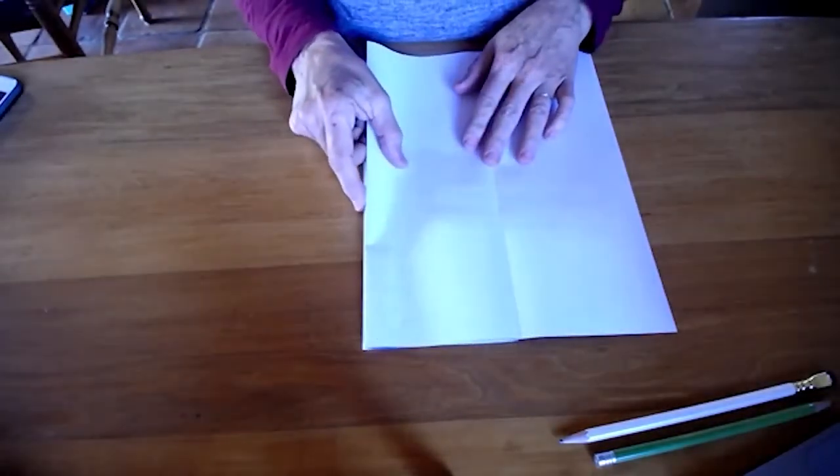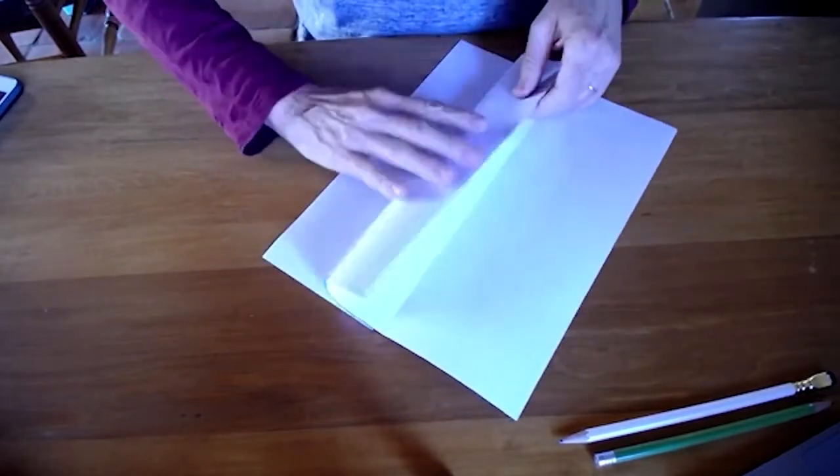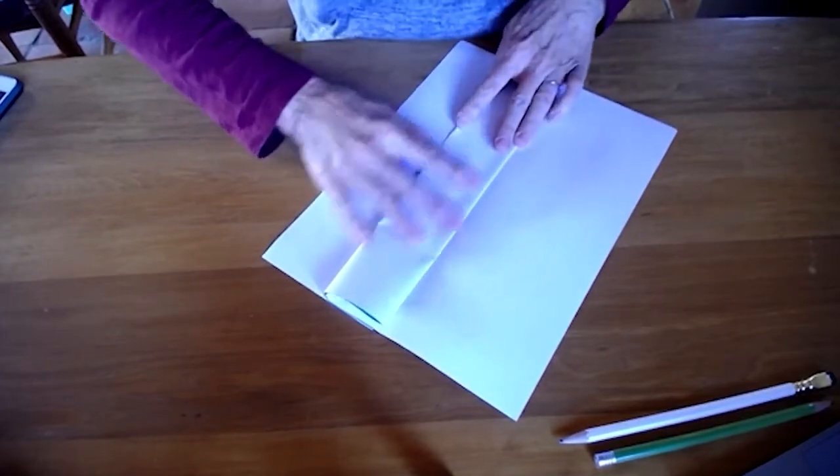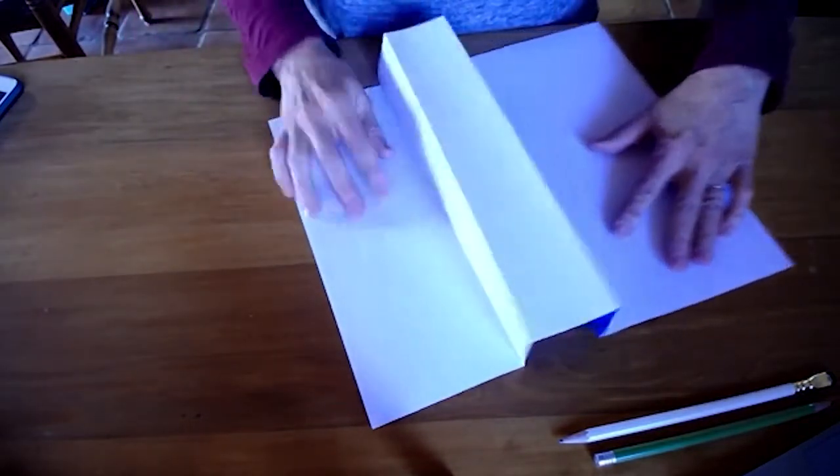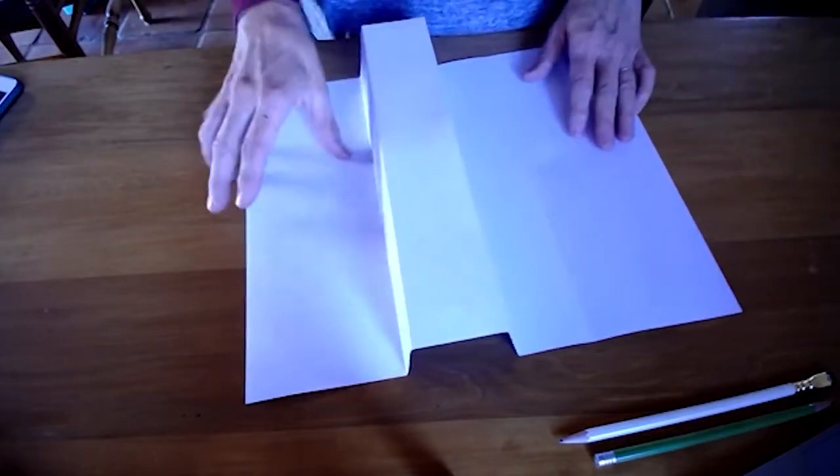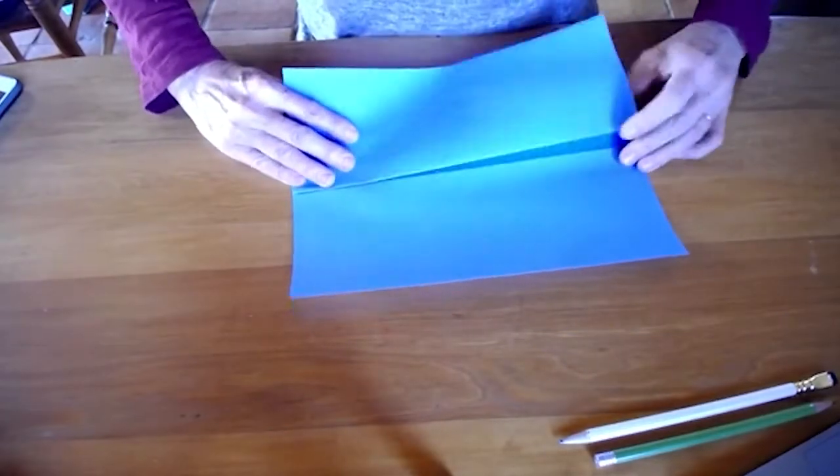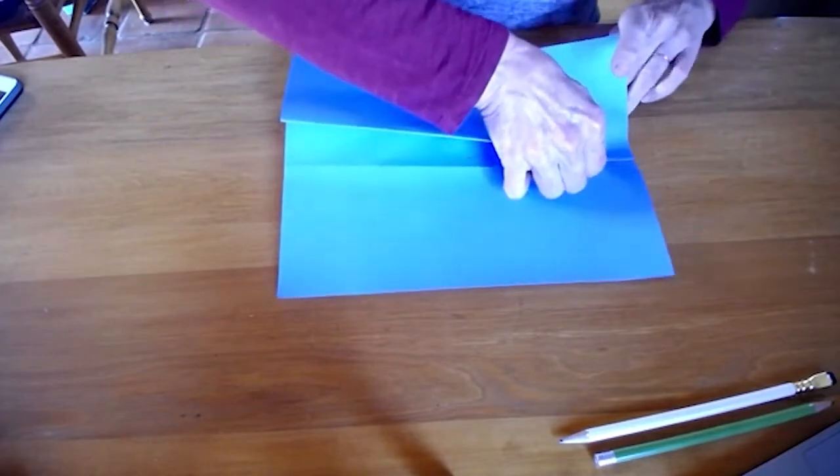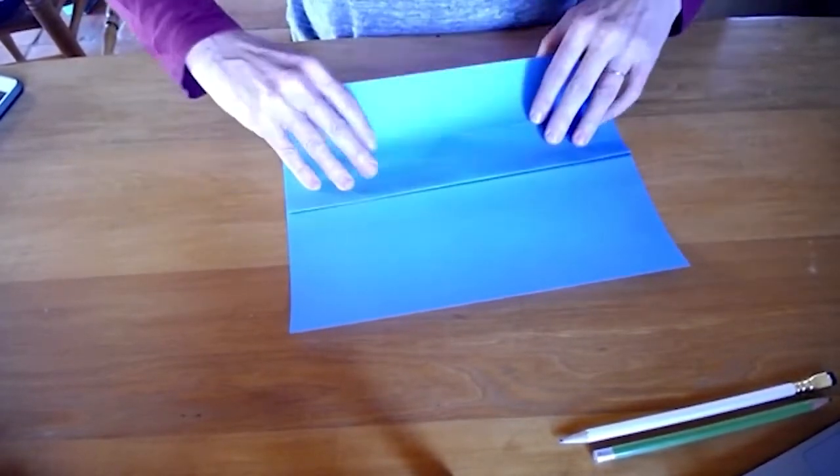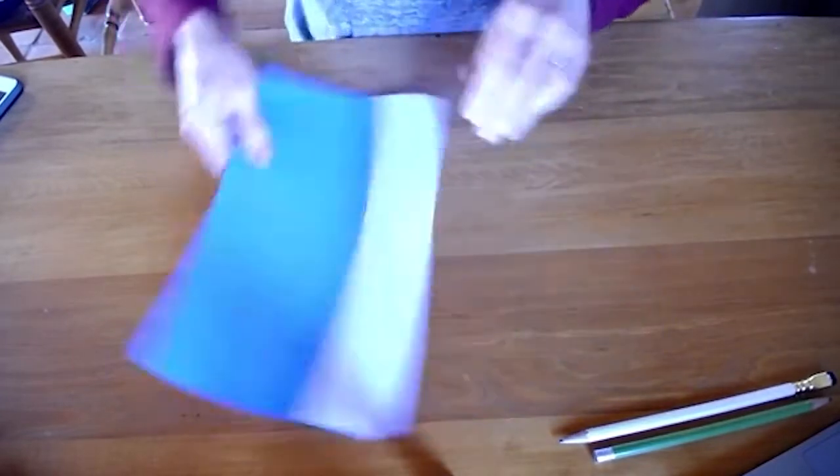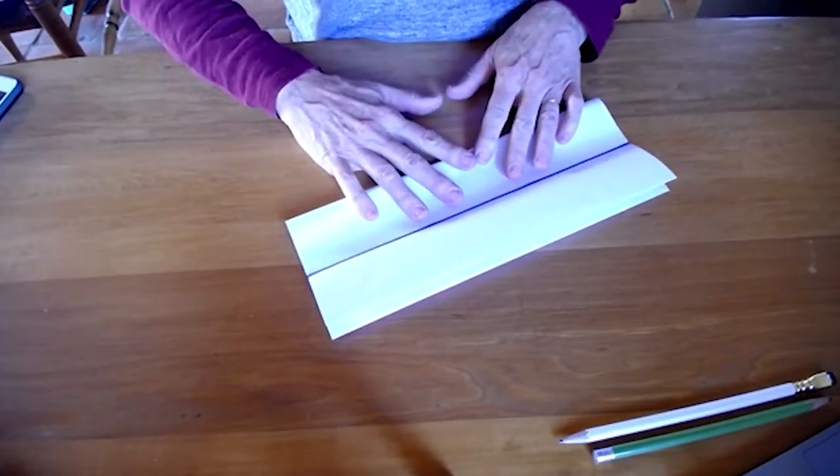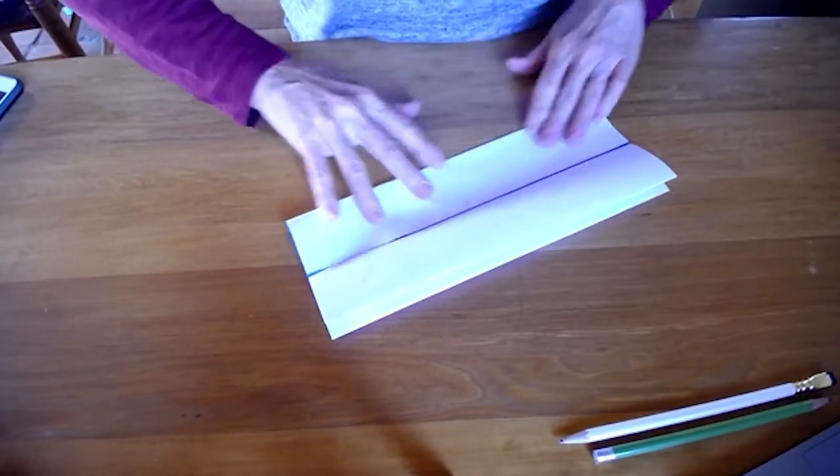We're going to take that folded edge and line it up with that crease there, and then take this cut edge and line it up with this fold. And then this, and line it up with this fold like so.